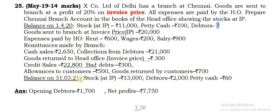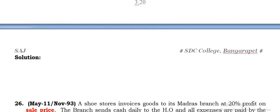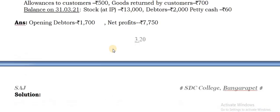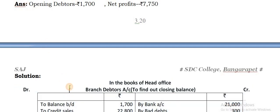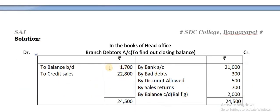You are given the closing balances. All closing assets you can take on credit side in the branch account. So you can go for the answer. First, start with the debtors account and complete it to get the opening debtors, which is a missing amount - the balancing figure.